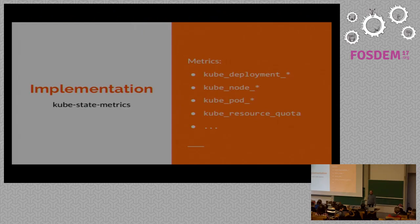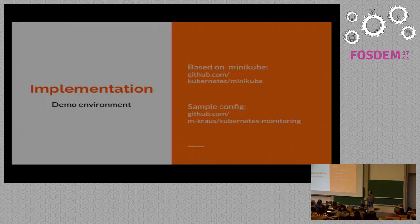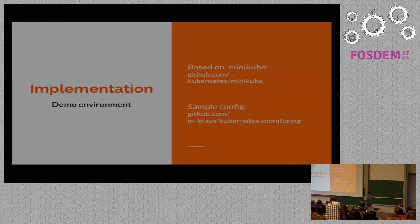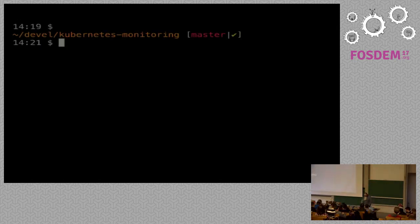So now we have three types of metric ingestion: Kubernetes service discovery itself, the node exporters for cluster node metrics, and kube-state-metrics. In the demo environment here, I can show you these metrics. This demo environment is based on Minikube — a subproject of Kubernetes for running a sample Kubernetes on your laptop. The sample config is available on my GitHub account. Links and presentation slides you'll find on the FOSDEM schedule event page for my talk.